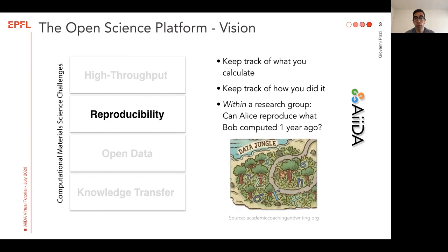The second part is reproducibility. You want to keep track of what you calculate and you want to keep track of how you did it, and you want to make sure that other people can reproduce your research. This could be within a research group — Alice, a new postdoc in the group, can reproduce what Bob did last year. But this can be even yourself, or can be for people outside your research group that want to reproduce your research.